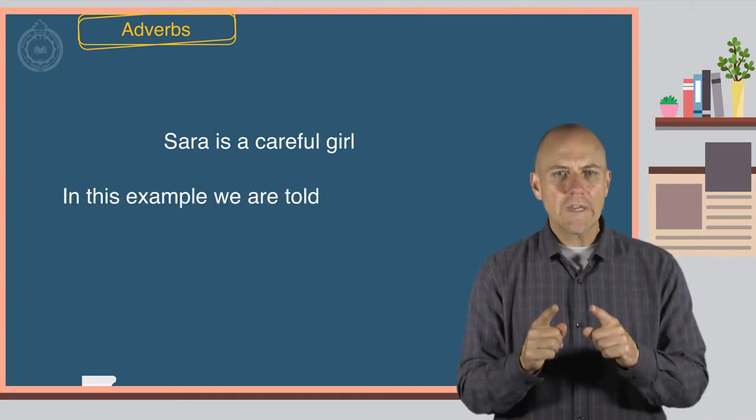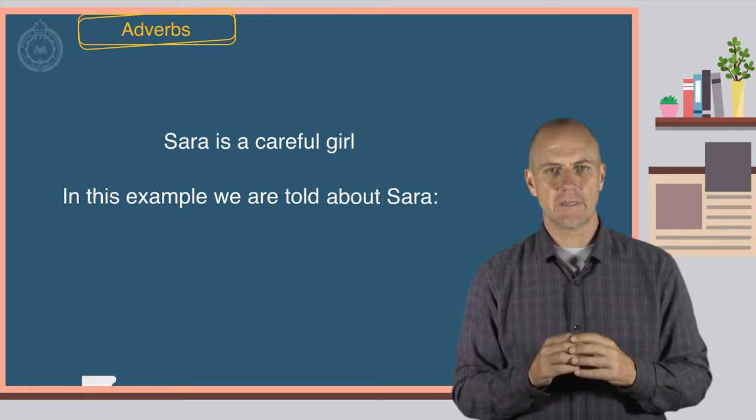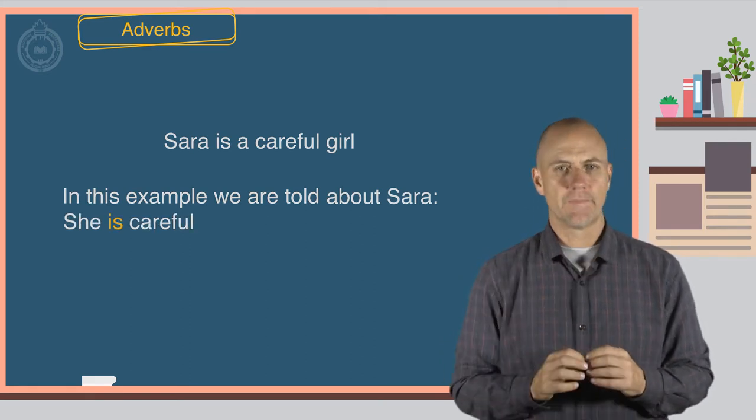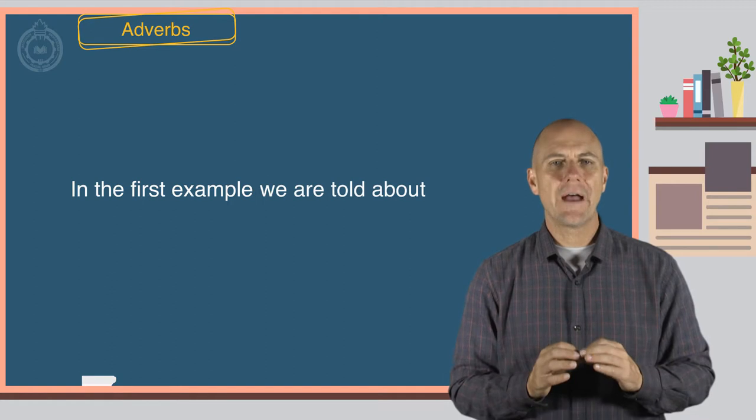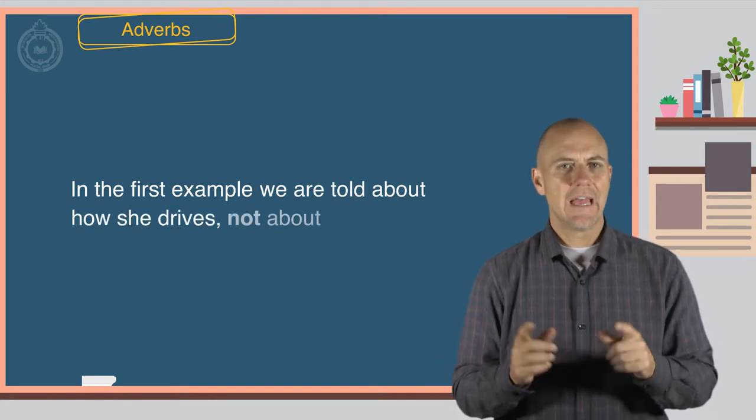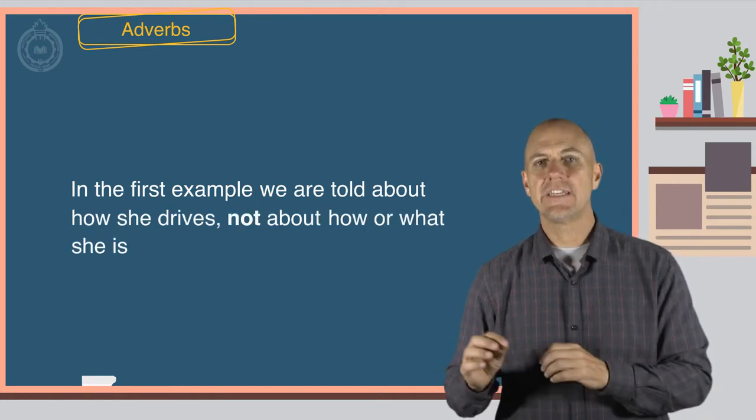In this example we are told about Sarah. She is careful. In the first example, we are told about how she drives, not about how or what she is.